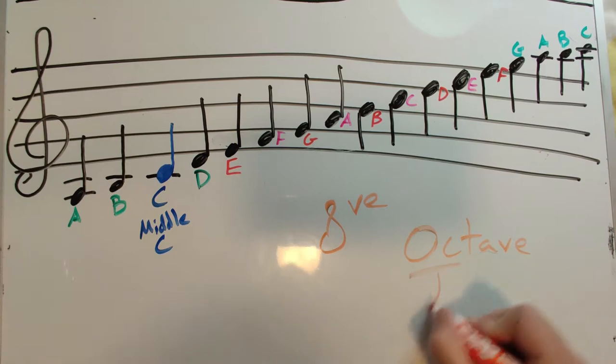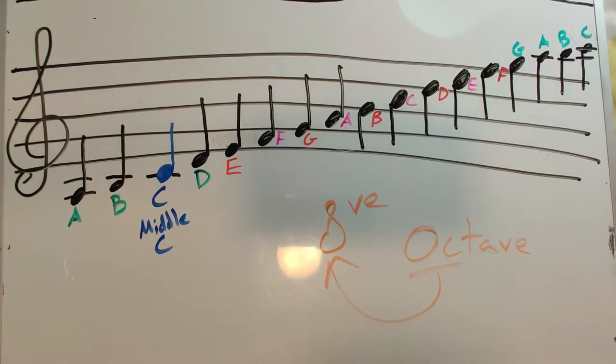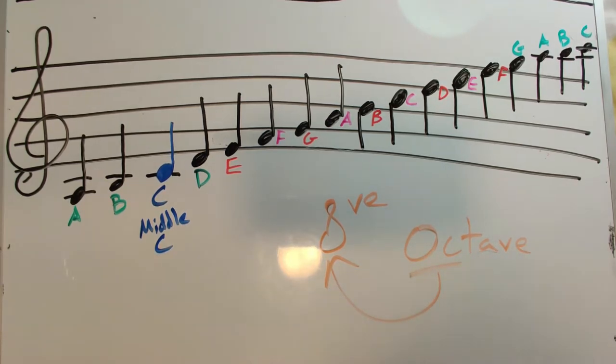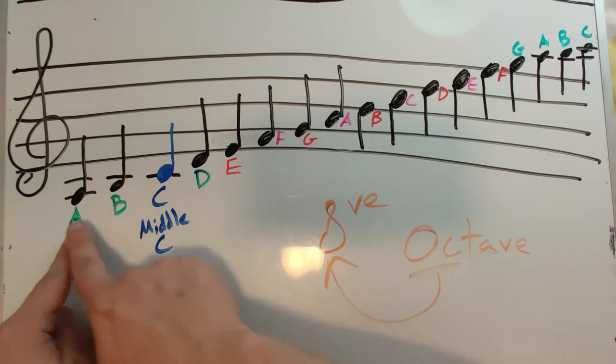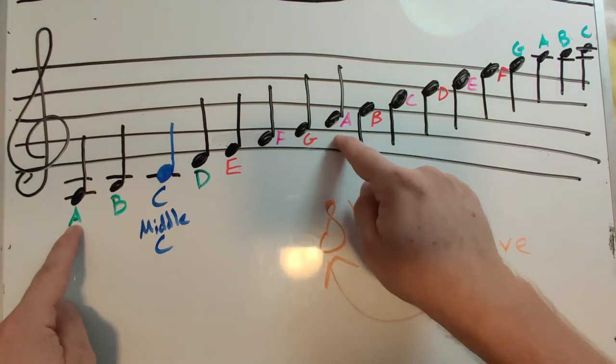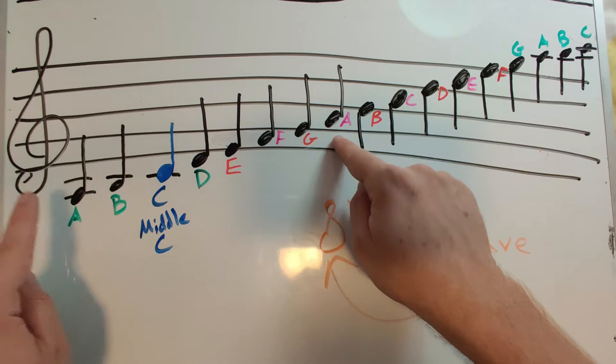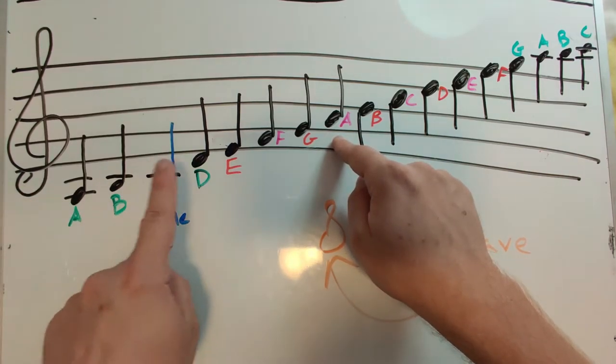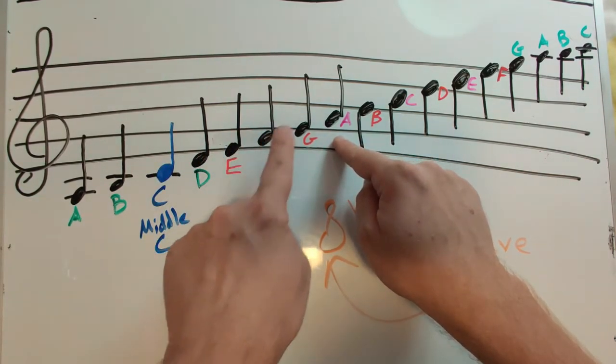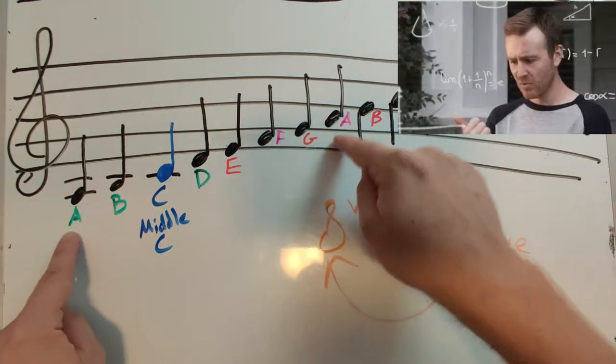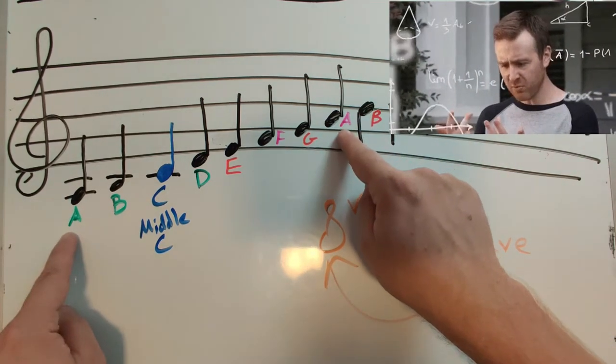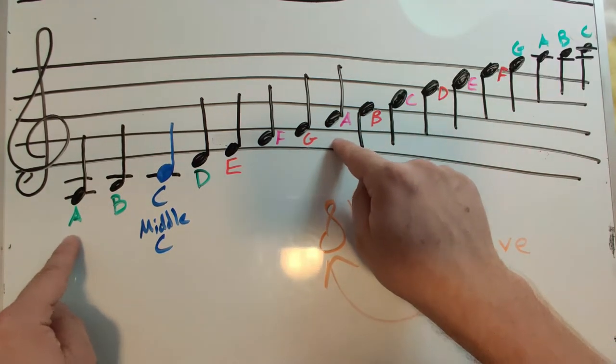So let's talk about octaves real quick. Octave, of course, meaning eight. An octave means that a certain note is eight steps away from another note of the same letter. So for example, an A, from this A to this A, it's going to be eight steps. And you always count your first step. One, two, three, four, five, six, seven, eight. From this A to this A, it's an octave apart. They're eight steps away from each other.